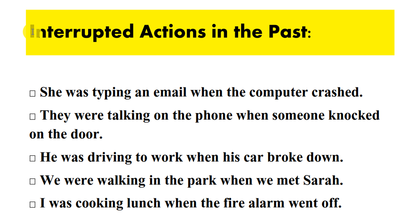The past progressive tense is used to express interrupted actions in the past. For example: 'She was typing an email when the computer crashed.' 'They were talking in the room when someone knocked on the door.' 'He was driving to work when his car broke down.'